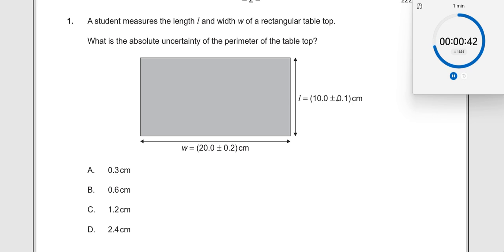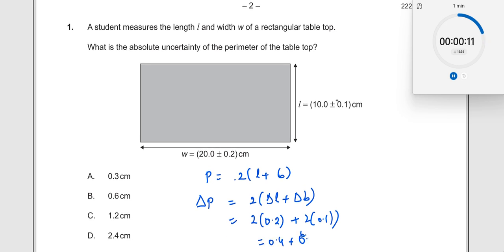So we know perimeter is given by twice of l plus b. Therefore I want absolute uncertainty delta p should also be equal to 2 times delta l plus delta b. This is what we need. And what is the value of delta l? 0.2. So 2 times 0.2 plus 2 times delta b is 0.1. Therefore 0.2 into 2 is 0.4 plus 0.2, which should be equal to 0.6. So the answer is 0.6 centimeters.